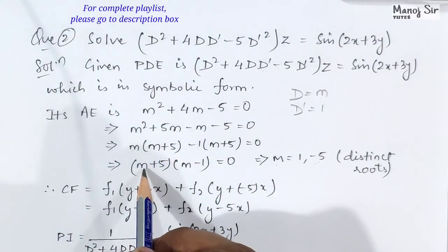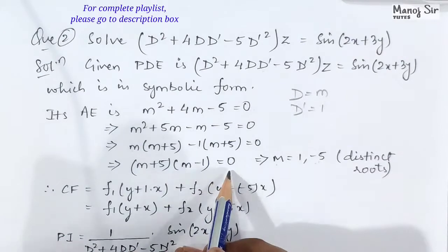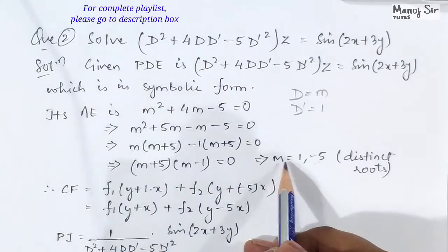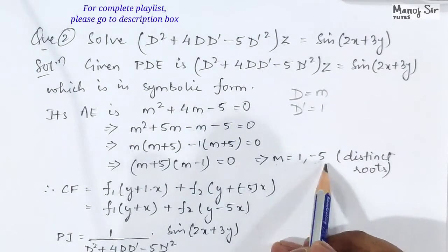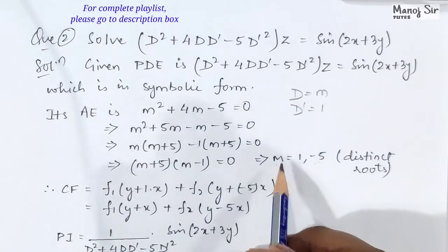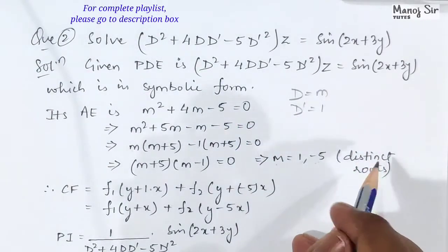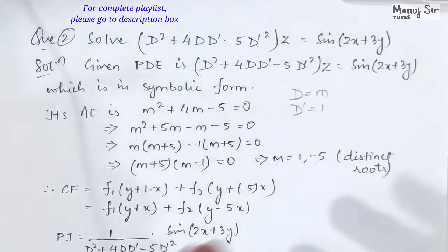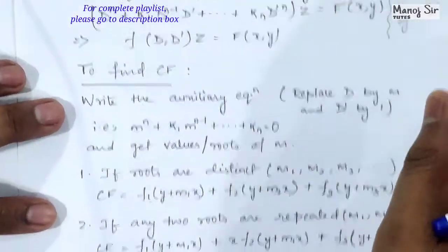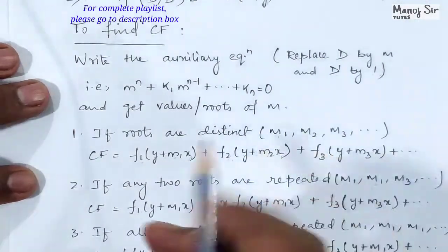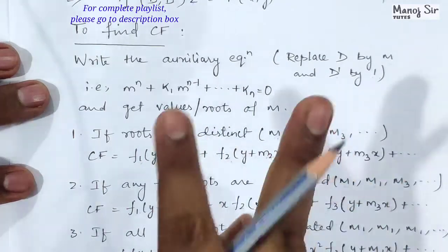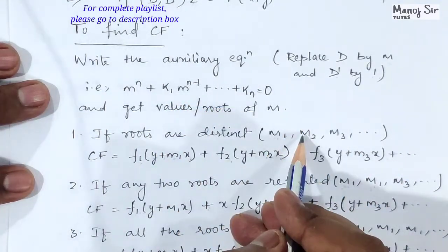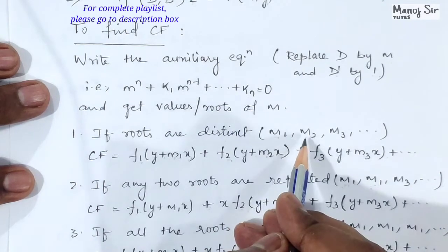Solving the auxiliary equation: (m + 5)(m - 1) = 0, which gives m = 1 and m = -5. Here you can see the values of m are 1 and -5, which are distinct roots. We have two roots of m and both are distinct. From video number 17, we know the form of the CF when roots are distinct — here m1 = 1 and m2 = -5.